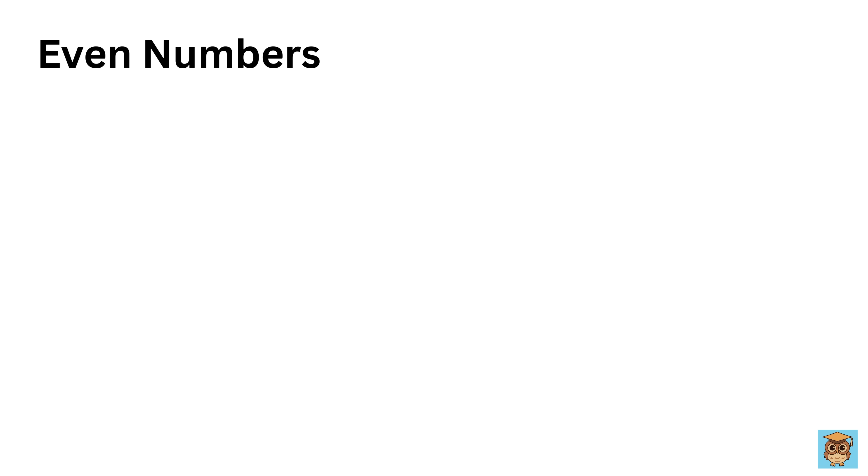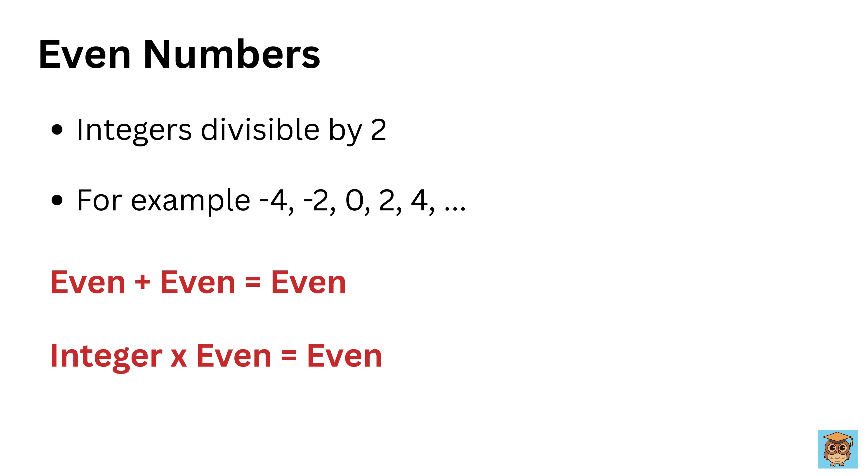Even numbers are integers divisible by 2, including negative, 0, and positive values such as -4, -2, 0, 2, 4, and so on. The sum of two even numbers is always even, and the product of any integer with an even number is always even.